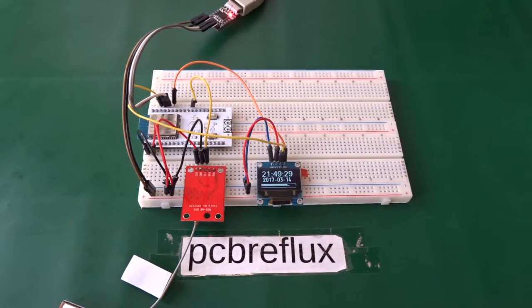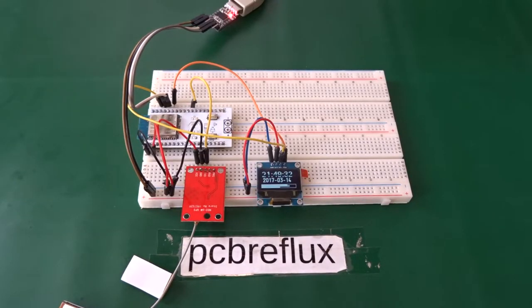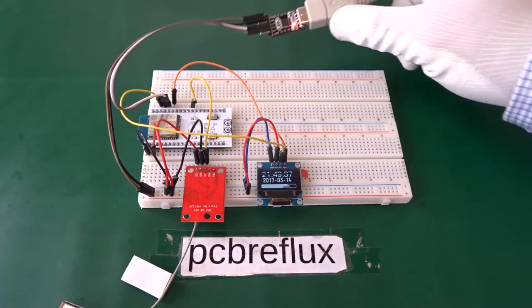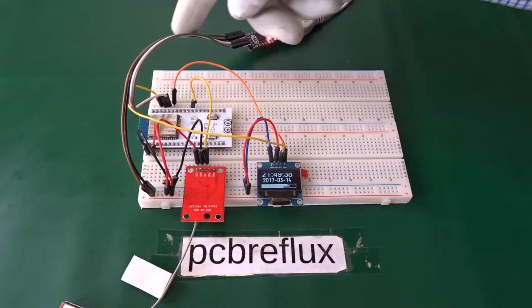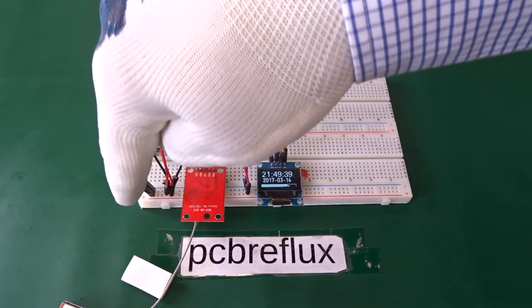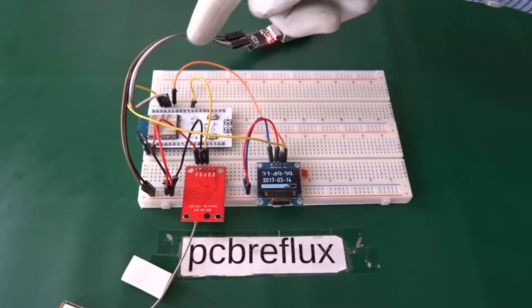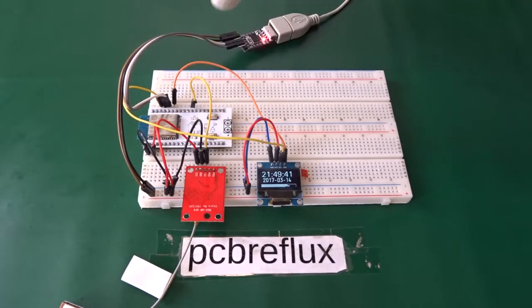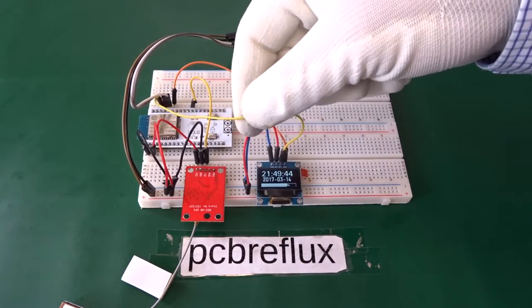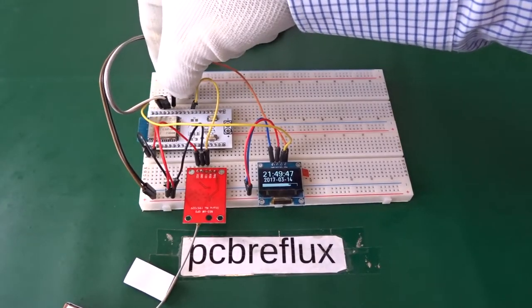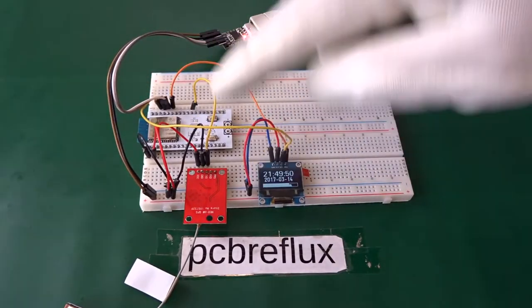Here we see the whole setup on the bench. First the UART converter that's also providing the power for all modules. Here we see the VCC and ground connection and also the transmit and receive line. This is the I2C bus connection for the display, the data and the clock line.